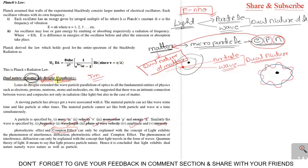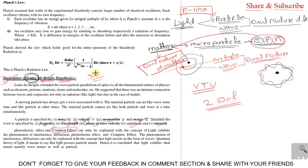With this we came to know what is the dual nature of matter or de Broglie's hypothesis. In the exam, you can expect a two-marks definition for dual nature of matter or de Broglie's hypothesis — that's it. In this concept you can expect only two marks definition.